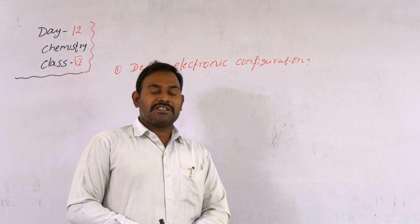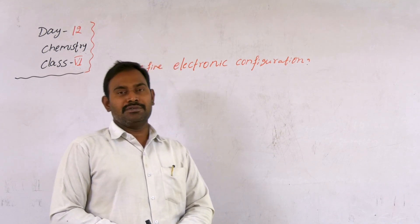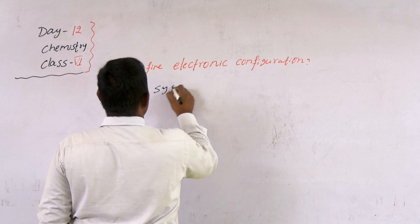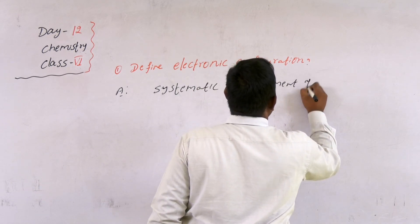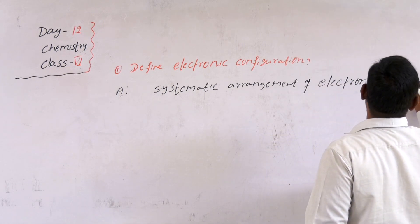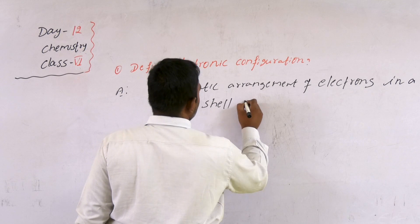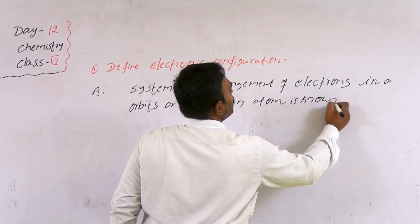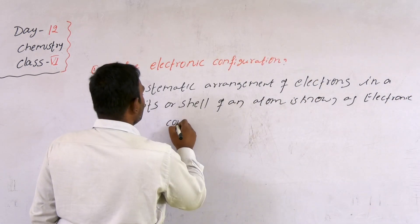The systematic arrangement of electrons inside the atom in orbits or shells is known as the electronic configuration.